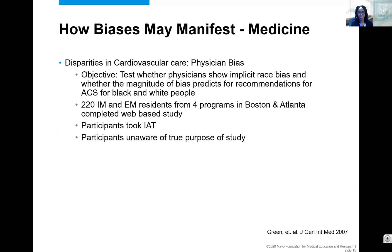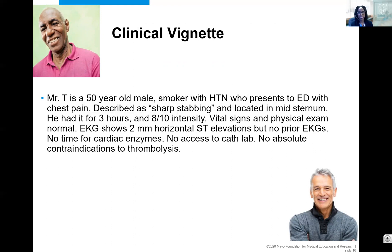This study in general internal medicine I thought was really impressive. The objective was to test whether physicians show implicit race bias and whether the magnitude of that bias would predict recommendations for acute coronary syndrome between black and white patients. They had 220 IM and EM residents from four programs in Boston and Atlanta, who completed a web-based study. They were specifically asked about their explicit biases, and then all participants took the implicit association test. All residents were not aware of the true purpose of the study. They were shown a clinical vignette: Mr. T is a 50-year-old smoker with hypertension who presents to the emergency department with chest pain — sharp, stabbing, mid-sternal — for three hours at high intensity, but vital signs and physical exam are normal.